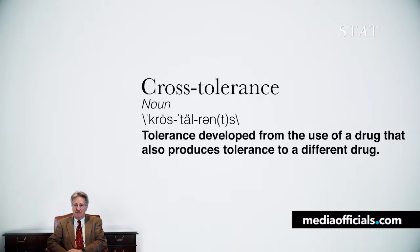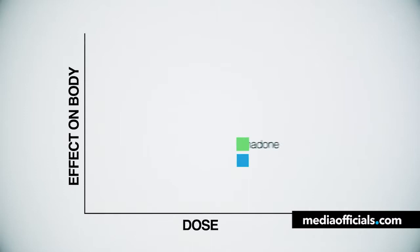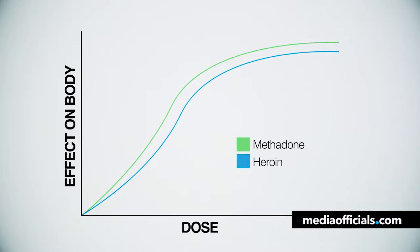Basically an individual would be treated with a dose that is escalated high enough so that if the individual went out and shot up some heroin, they would not be able to feel it because the tolerance produced by the methadone would be high enough to block its effects.